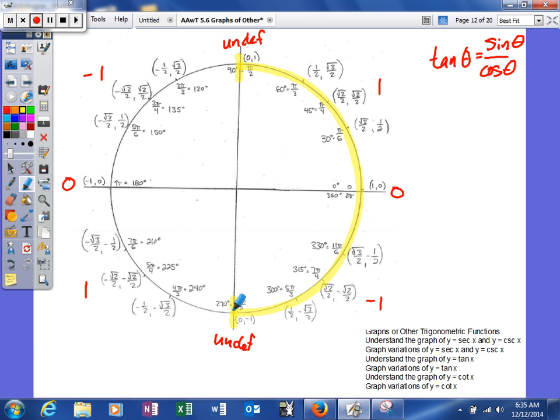It goes undefined, negative 1, 0, 1, undefined, and then negative 1, 0, 1, undefined. So there's actually two cycles of your tangent graph in one unit circle, as opposed to sine and cosine where there is only one cycle. So let's see if we can't look at how to graph one on the next slide.